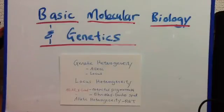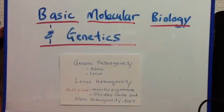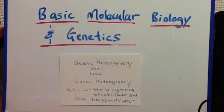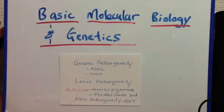Moving on to allelic heterogeneity — different mutations occurring at the same locus — this is an important cause of clinical variation. Sometimes different mutations at the same locus produce a clinically indistinguishable or closely similar disorder, while in other cases they can lead to very different clinical presentations.